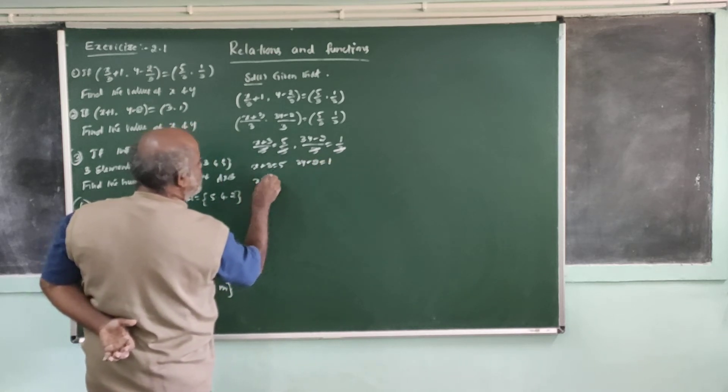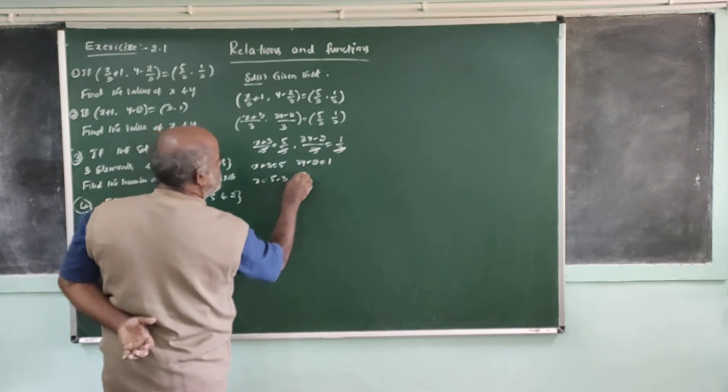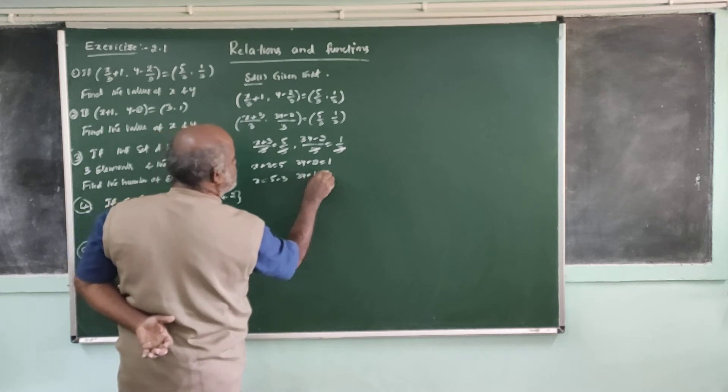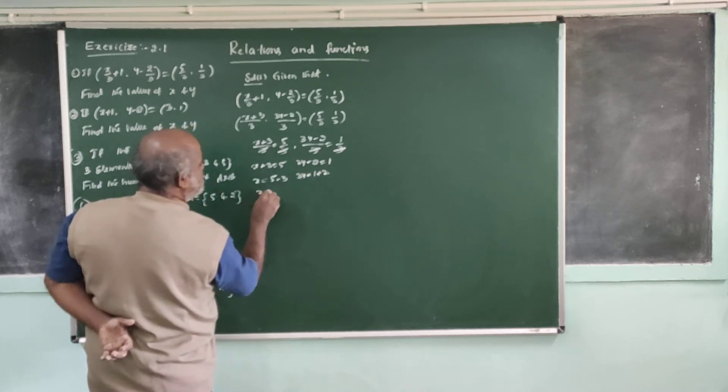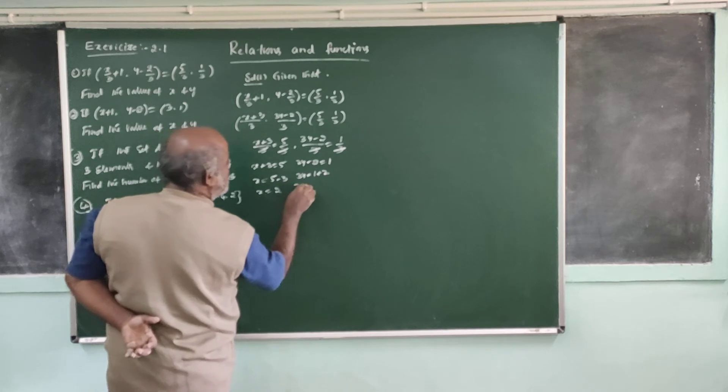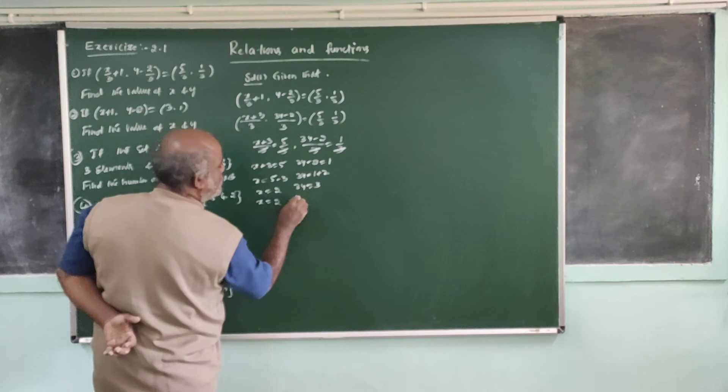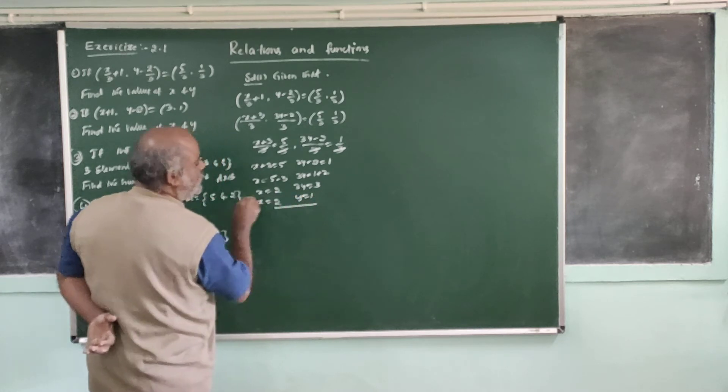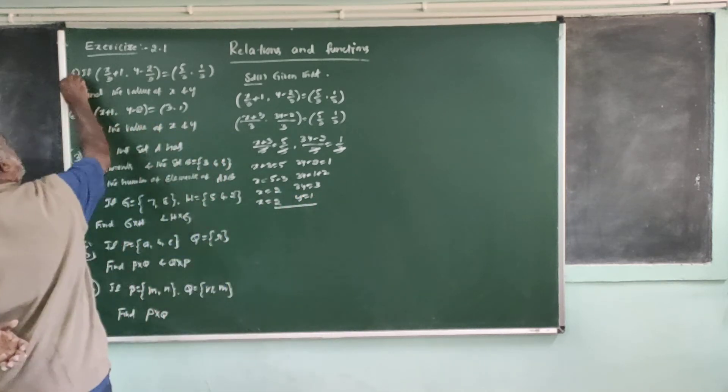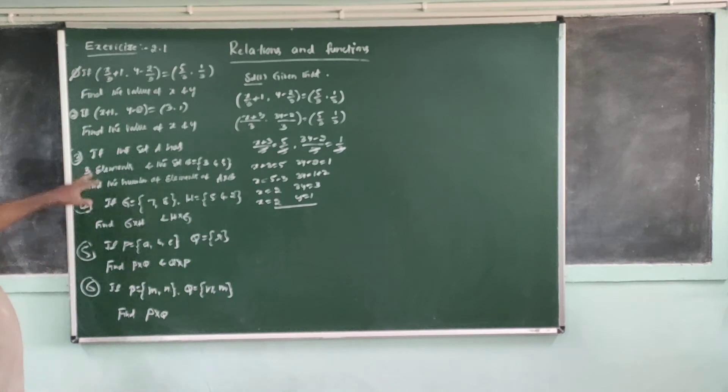x is equal to 5 minus 3. 3y is equal to 5. 3y is equal to 1 plus 2. x is equal to 2. 3y is equal to 3. x is equal to 2. 3y is equal to 3, y is equal to 1. Now, one is equal to 1. Let's look at the other way.